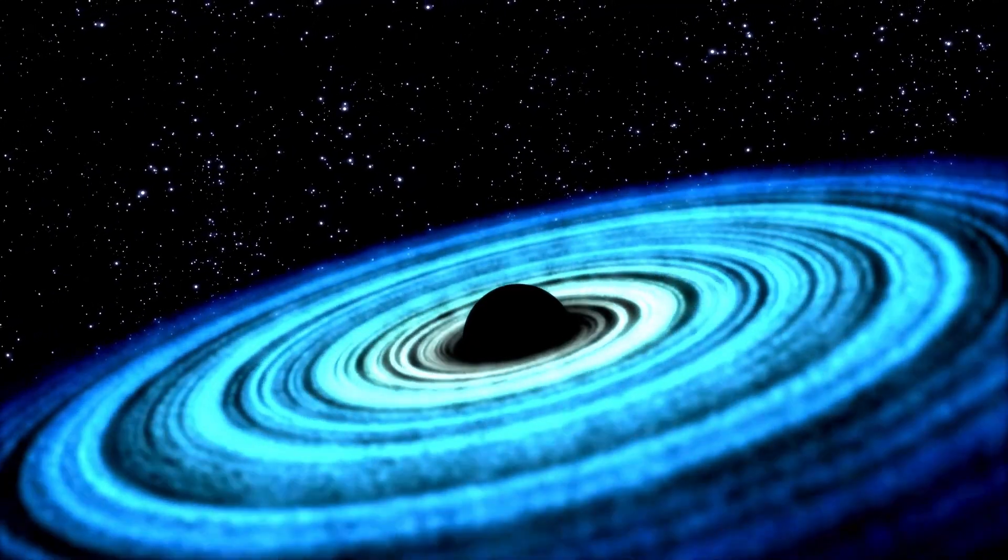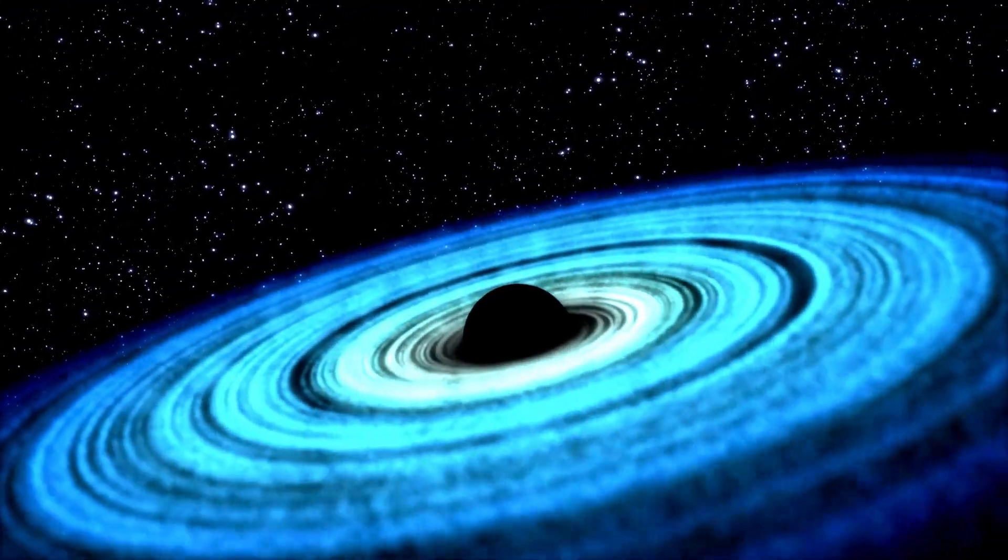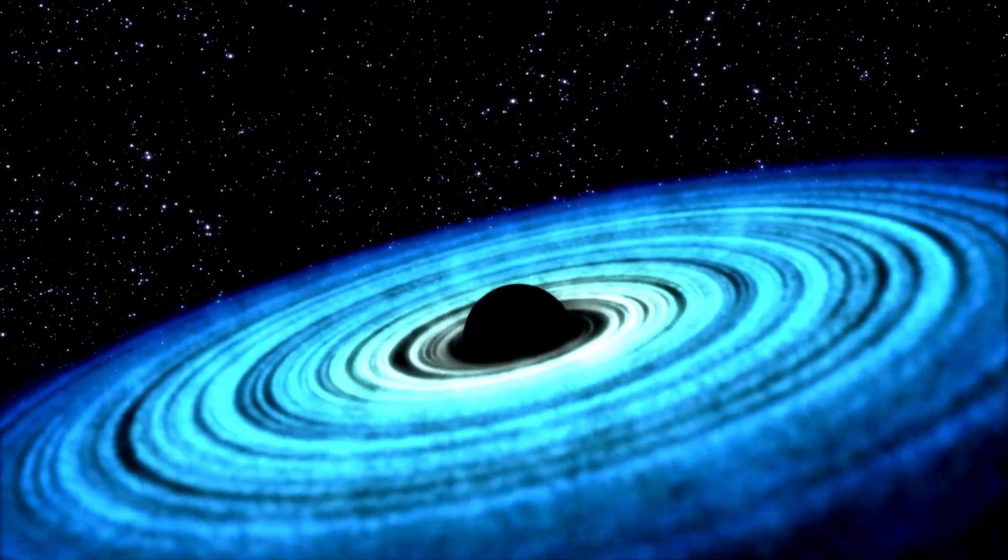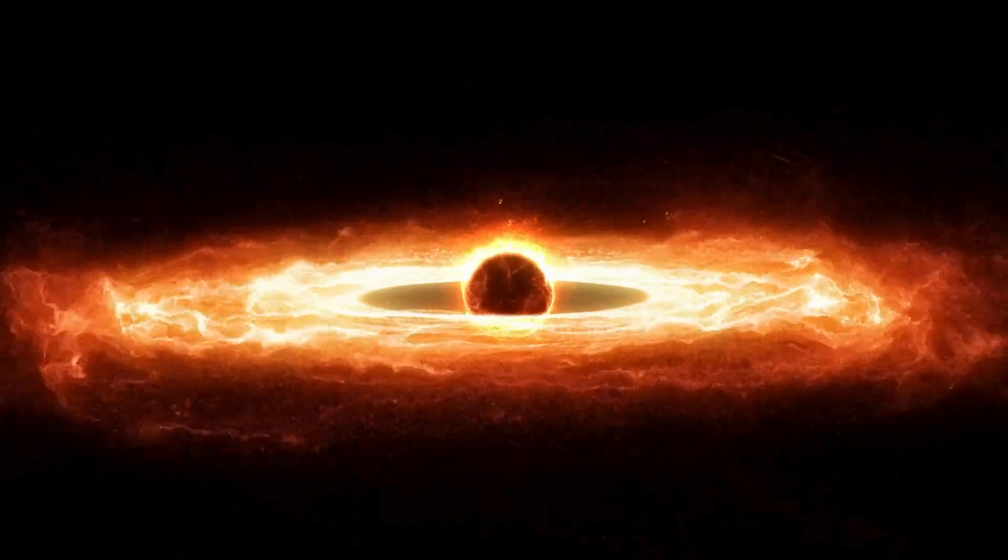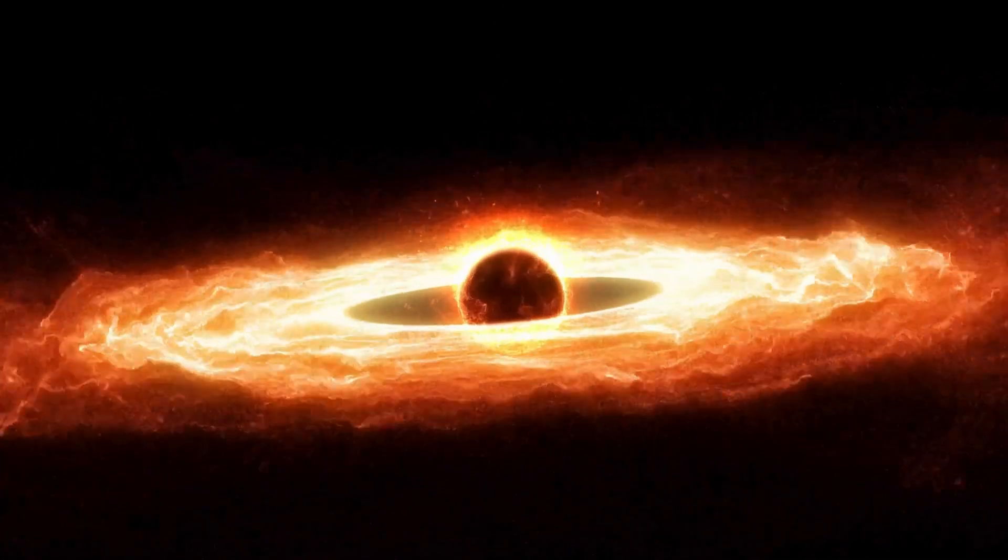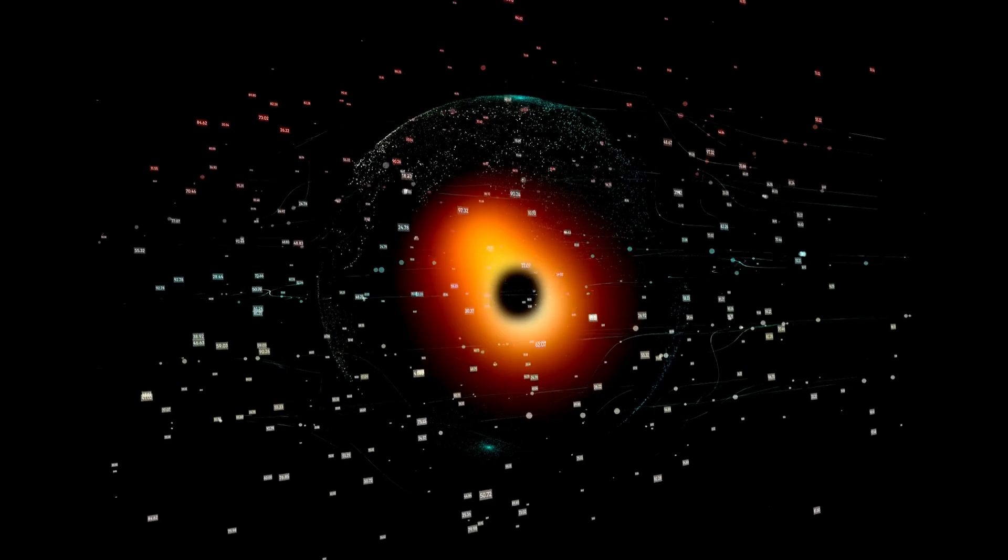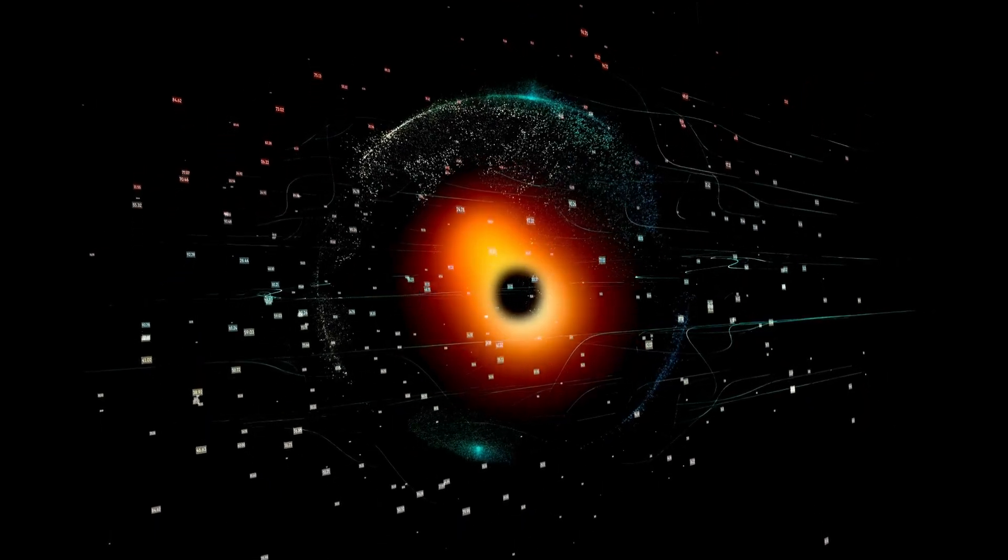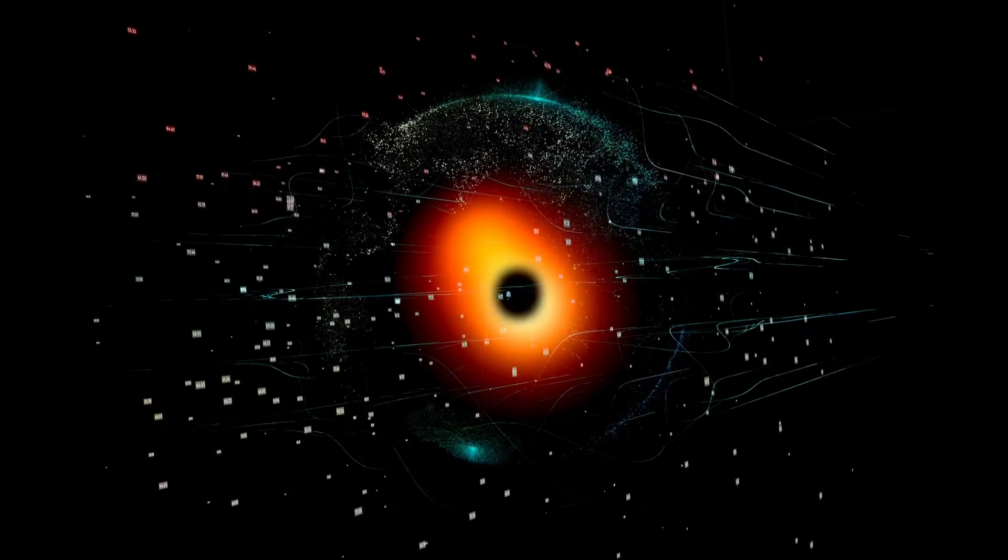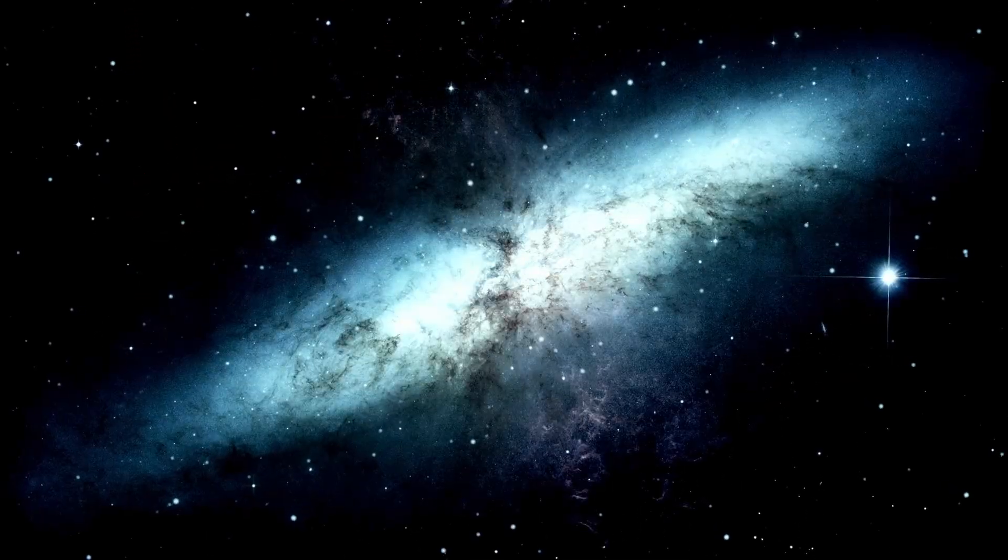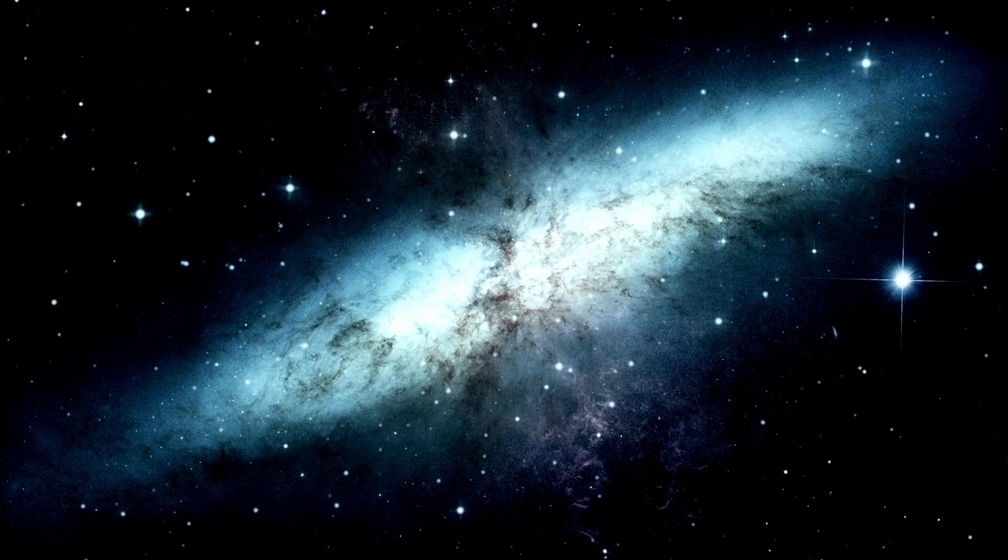Stellar mass black holes, remnants of massive stars, can be as large as 10 to 24 times the size of the sun. There could be as many as 10 million to a billion of them in the Milky Way alone, that's an astronomical number of black holes that could swallow anything in their path. But wait, there's more. Supermassive black holes are on the other end of the spectrum, they're millions, if not billions, of times larger than the sun. They exist at the center of large galaxies, including our very own Milky Way. It's like a gaping dark void that's pulling everything towards it.